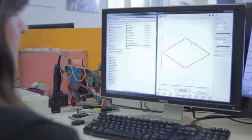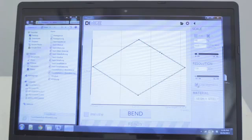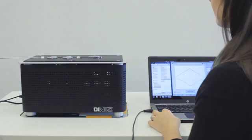The way the DIYer works is you take your 2D curve, save it as an SVG file, import it into our software and press bend.